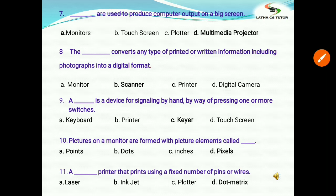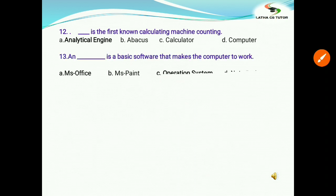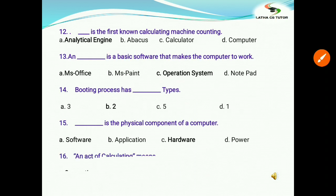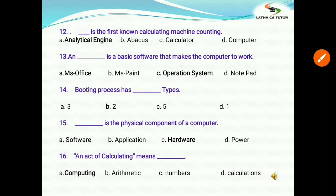A blank printer that prints using a fixed number of pins or wires: a) laser, b) inkjet, c) plotter, d) dot matrix. The answer is dot matrix. Next: What is the first known calculating machine for counting? Options: a) analytical engine, b) Abacus, c) calculator, d) computer. The correct answer is analytical engine. It was the first machine used for counting.